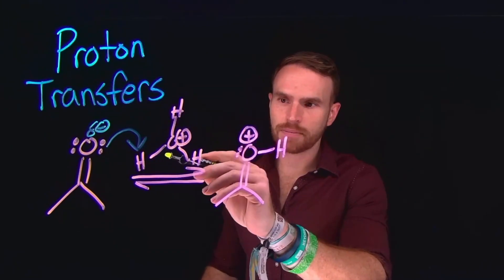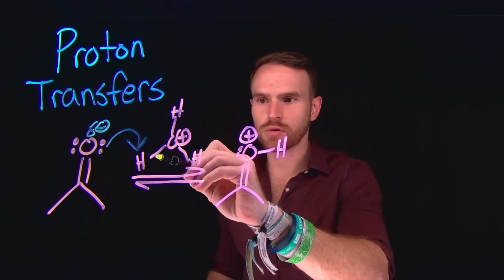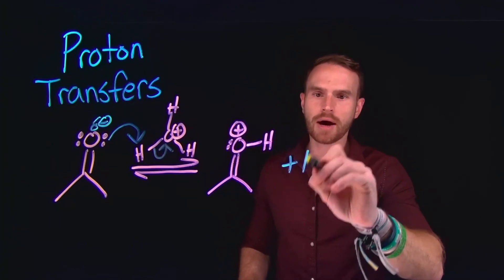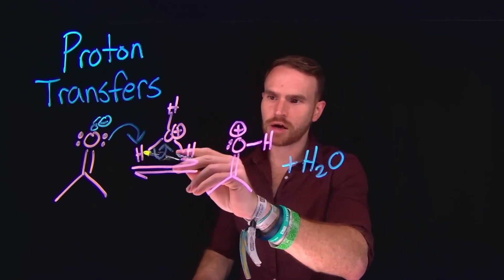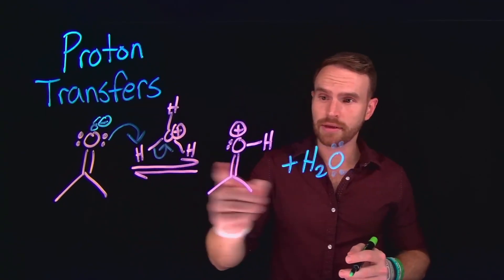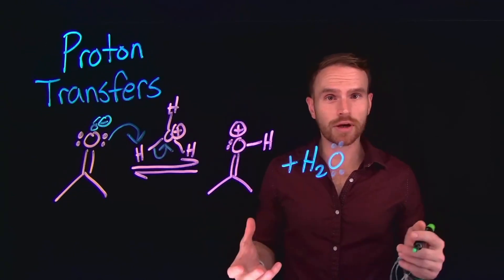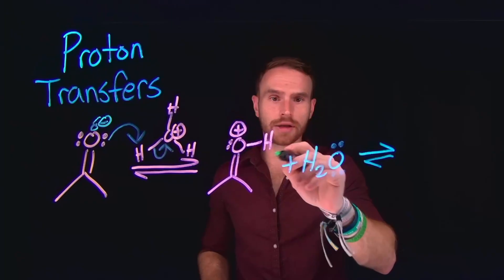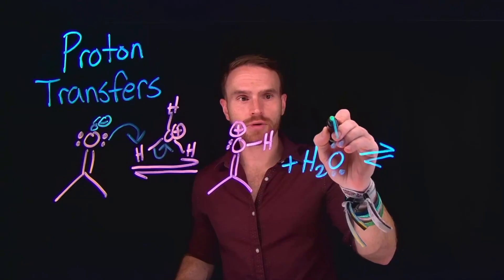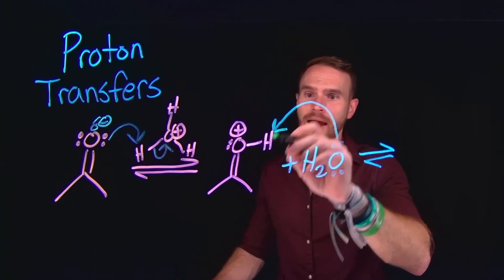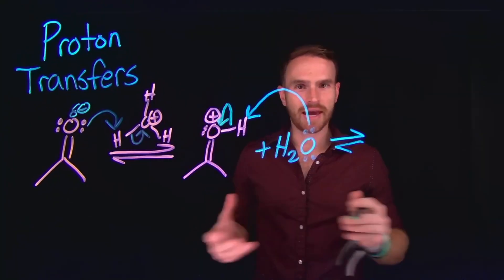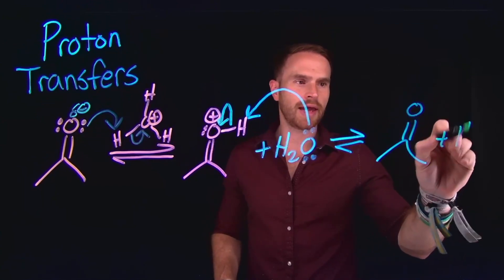There were two electrons contained in the covalent bond between oxygen and hydrogen from our acid, so we need to indicate that those electrons are moving to be exclusively on the oxygen atom from the acid. This is going to produce a protonated carbonyl compound and leave behind water as H2O. This oxygen atom now has two lone pairs of electrons. Importantly, this was the forward direction. Another proton transfer could occur where that proton is transferred back to water to reproduce our initial acid, H3O+, and our carbonyl compound.